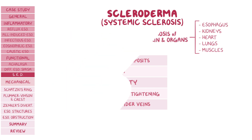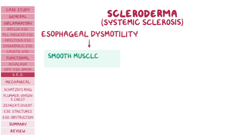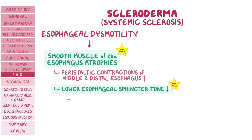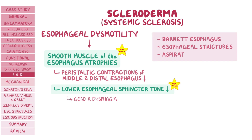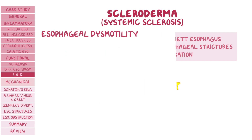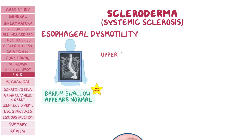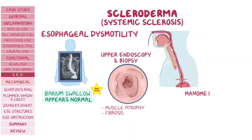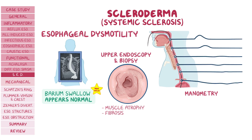In sclerodermal esophageal dysmotility, the smooth muscle in the esophagus atrophies, and as a result, peristaltic contractions in the mid and distal esophagus become ineffective or totally absent. The lower esophageal sphincter tone is lower than normal, which can lead to gastroesophageal reflux disease and dysphagia; so these individuals can also present with Barrett's esophagus, esophageal strictures, or aspiration. The barium swallow can appear normal, but upper endoscopy with biopsy can show evidence of muscle atrophy and fibrosis. Manometry shows reduced esophageal peristalsis in the middle and lower esophagus and decreased pressure in the lower sphincter.